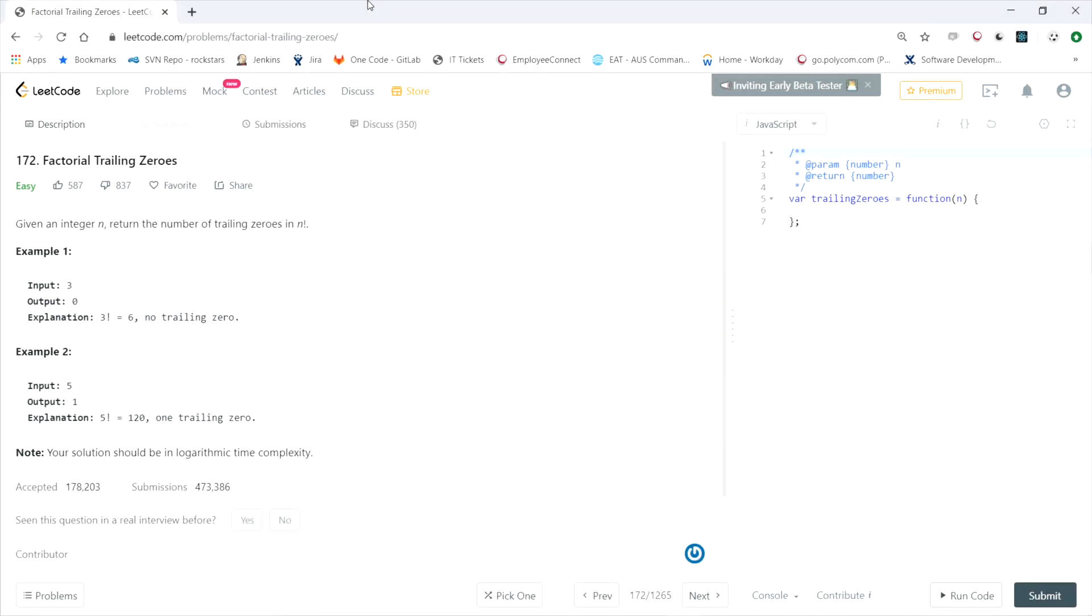Alright, this LeetCode question is called Factorial Trailing Zeros. It says given an integer n, return the number of trailing zeros in n factorial. For the first example, if the input is 3, our output should be 0 because 3 factorial is 6, and 6 has no zeros at the end. But for example 2, if the input is 5, we should return 1 because 5 factorial is 120, and 120 has one zero at the end. Then it says your solution should be in logarithmic time complexity.